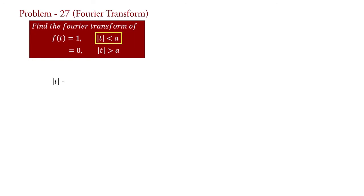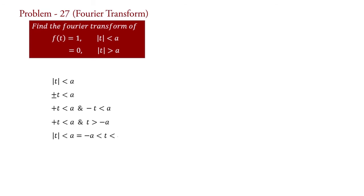Here |t| < a means ±t < a, that is +t < a and −t < a, which gives t > −a. So |t| < a is equivalent to −a < t < a.